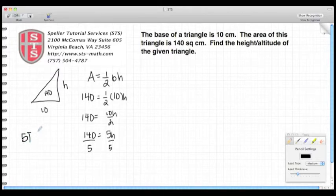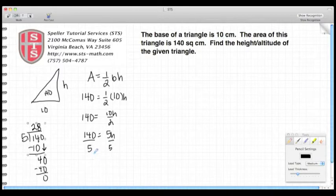140 divided by 5. 5 goes into 14 two times. 5 times 2 is 10. 14 minus 10 is 4. Bring down my 0. 5 goes into 40 eight times. 8 times 5 is 40, and we're done. So we see that our height is 28. We have 28 is equal to H.